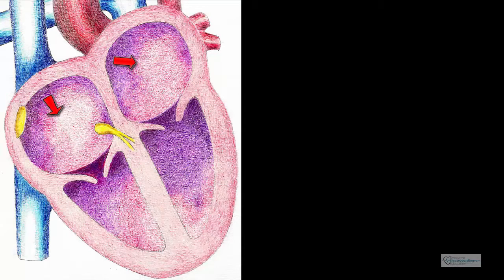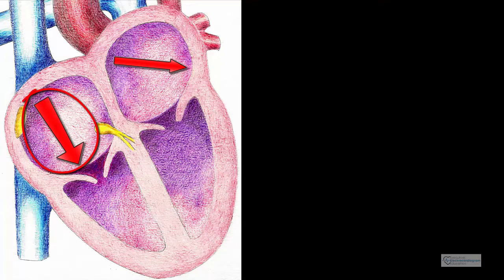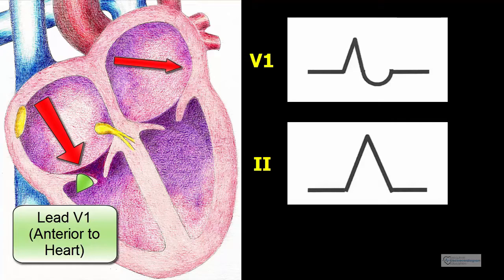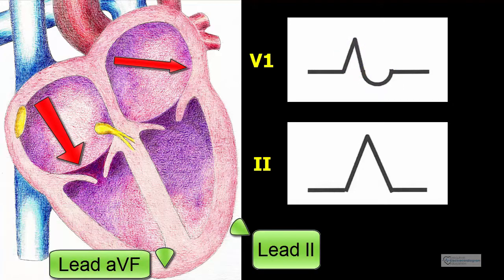Anatomically, right atrial abnormality is also easy to visualize. In this case, the atrial forces are more dominant toward the right and downward. Hence an electrode placed in front of the heart, such as V1, will see a strong deflection coming toward it before seeing a deflection going away and to the left. As such, V1 gives a tall, upright, peaked P wave, followed by a small, inverted P wave. Similarly, leads 2 and AVF, and sometimes lead 3, see a strong atrial deflection coming toward them.